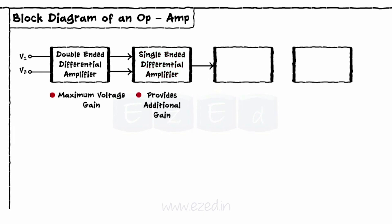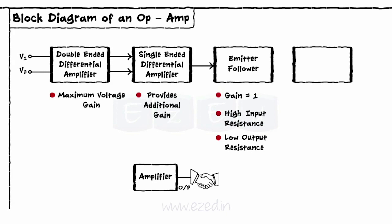The third block is an emitter follower. It has unity gain, high input resistance and a low output resistance. It matches the output of the amplifier stage with the input of the last stage.